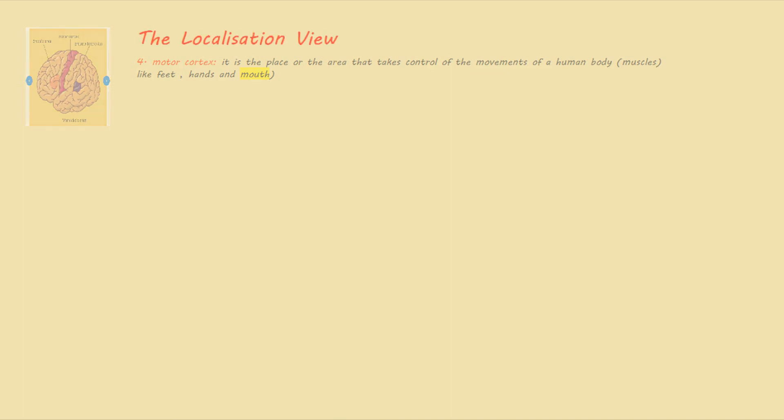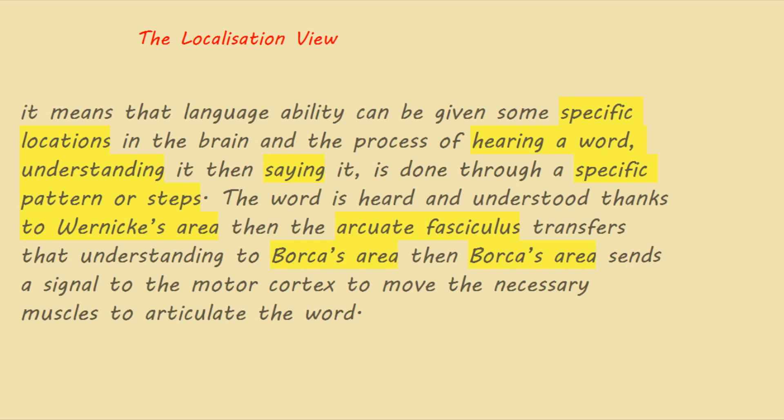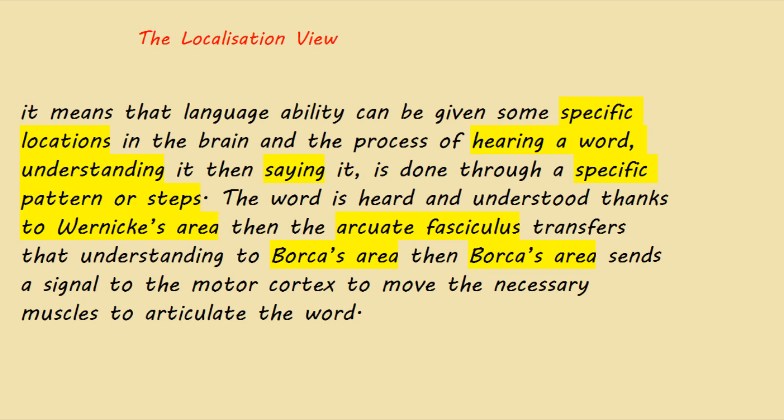Now we talk about the localization view. The localization view means that language ability can be assigned to specific locations in the brain, combining these four parts to fulfill their function and achieve successful language processing. The process of hearing a word, understanding it, then saying it is done through specific steps: first, the word is heard, then understood thanks to Wernicke's area, which we use to interpret words.